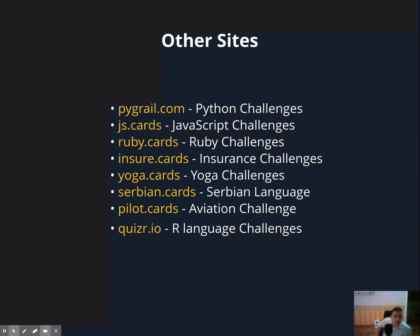After building SaaSensei, we used the platform to create a number of additional quiz games on programming languages such as Python, R, JavaScript, and Ruby. We also did it for other domains such as insurance, yoga, the Serbian language, and aviation. And we're about to release a new one on data — it will be called cdoquiz.com.